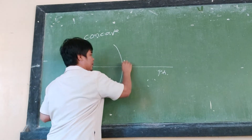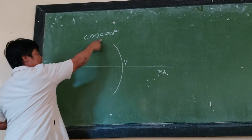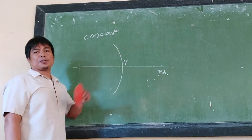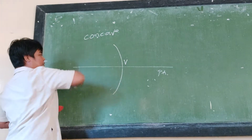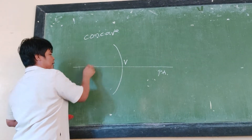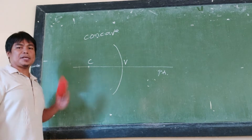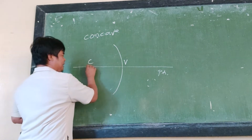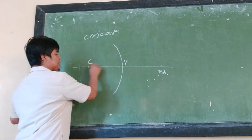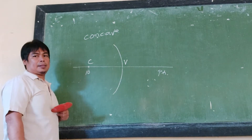The principal axis passes through the center of this mirror, and we call that center the vertex, denoted by V. If you extend this line, it actually forms a circle or a sphere — that's why they are called spherical mirrors, because they are portions of a sphere. The center of that circle is called the center of curvature, denoted by C. The line CV is what we call the radius of curvature.